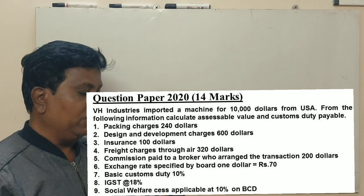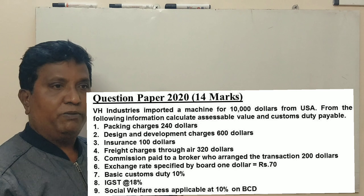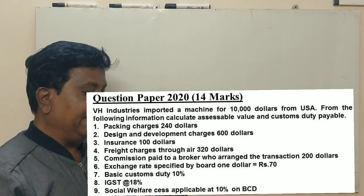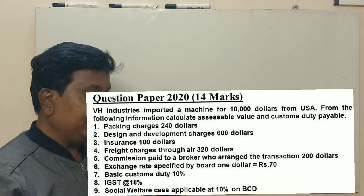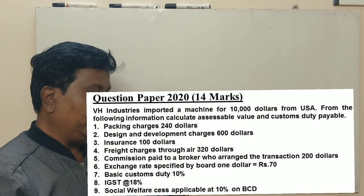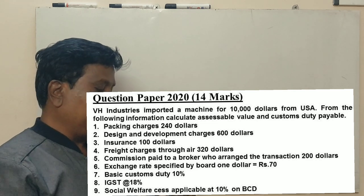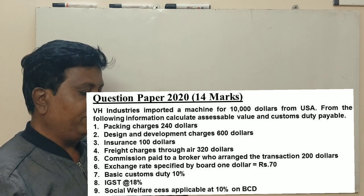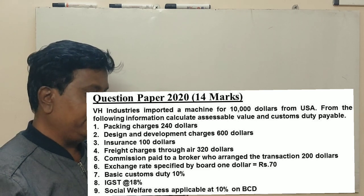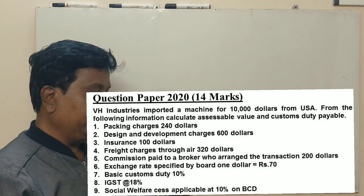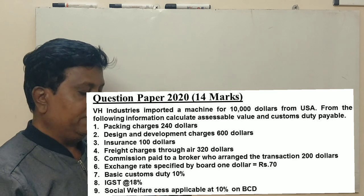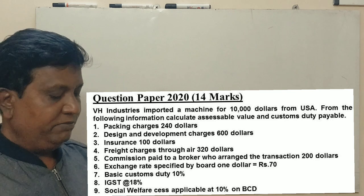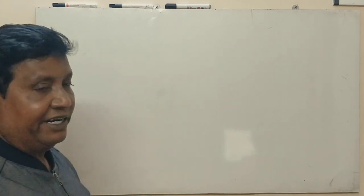The details are: FOB value imported machine invoice price, packing charges 240 dollars, design and development charges 600 dollars, insurance 100 dollars, freight charges through air 320 dollars, commission paid to a broker who arranged this transaction 200 dollars, exchange rate specified by board one dollar equals 70 rupees, basic customs duty 10 percent, IGST is 18 percent, social welfare cess applicable at 10 percent on basic customs duty.